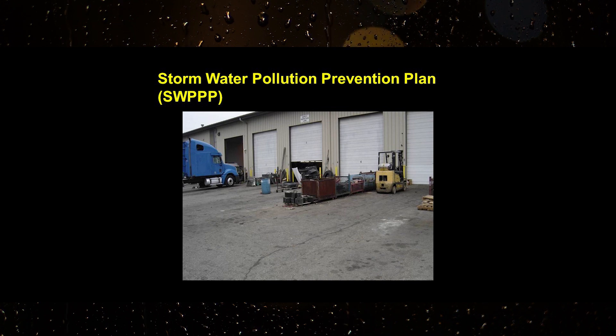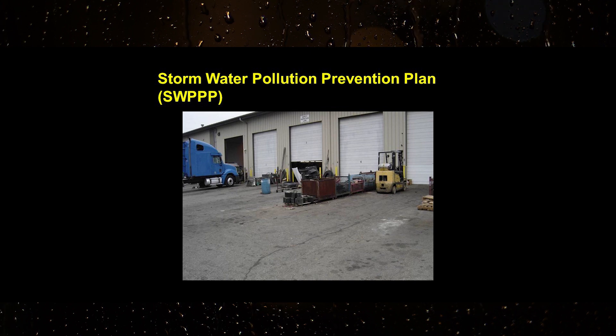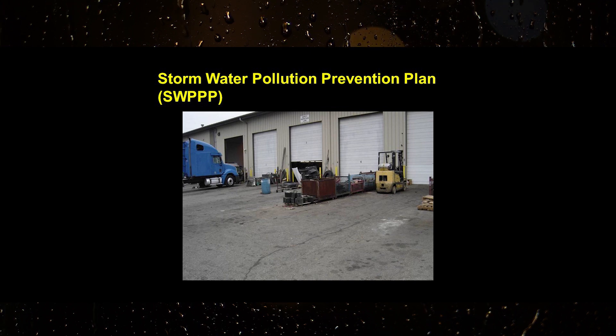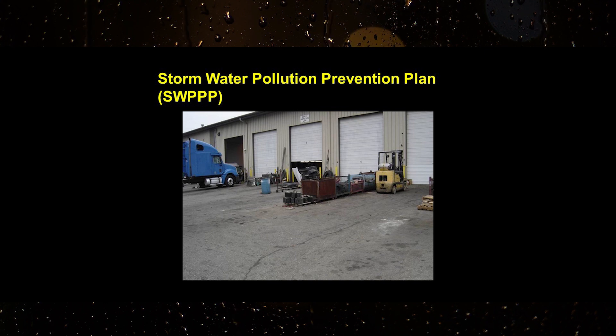The stormwater pollution prevention plan is a written plan intended to maximize the control of significant materials and to reduce the exposure of significant materials to stormwater runoff.